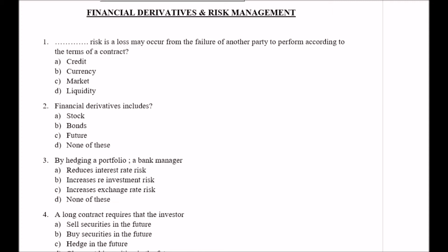Question number one: Blank space risk is a loss may occur from the failure of another party to perform according to the terms of a contract. Option A credit, Option B currency, Option C market, Option D liquidity. So guys, the right answer here is Option A, that is credit.